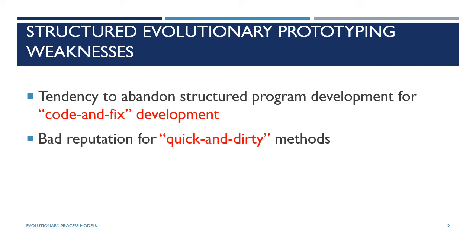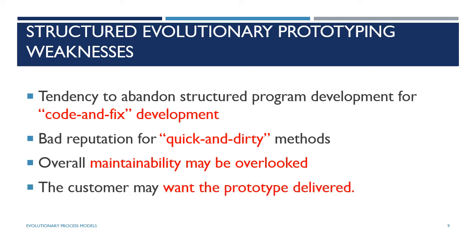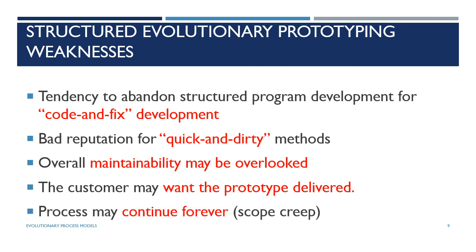Weaknesses: structured evolutionary prototyping has a bad reputation for quick and dirty methods. The customer may want the prototype delivered as the final product. The customer may continue requesting changes forever — this is known as scope creep. Unnecessary feedback can accumulate throughout the process.